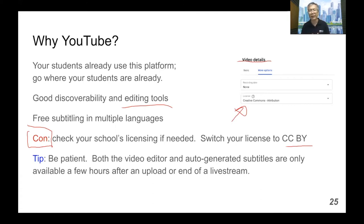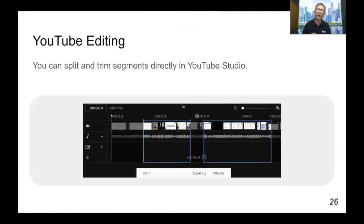Both editing and subtitles come in slowly after you upload the video — it may take a couple of hours for those to appear, so don't worry if you can't find the appropriate switch right away. The great thing about YouTube is that you can edit directly in YouTube Studio. If you have a relatively small amount of edits, you can split and trim segments directly by going to the Studio interface and choosing to edit. It gives you a black interface where you can hit the Trim button, which provides a large blue rectangle you can adjust to shorten or lengthen parts of the clip, or split the clip if you have a dead segment in the middle.